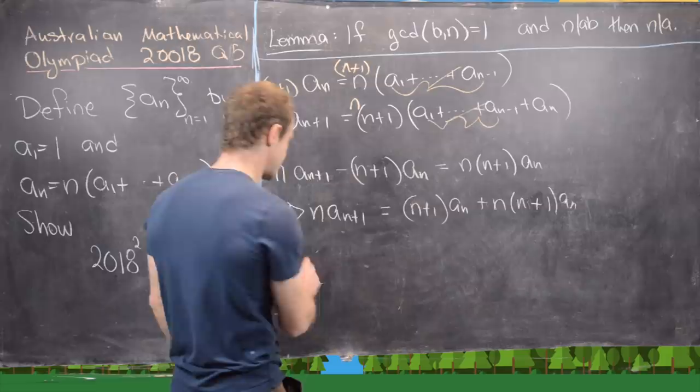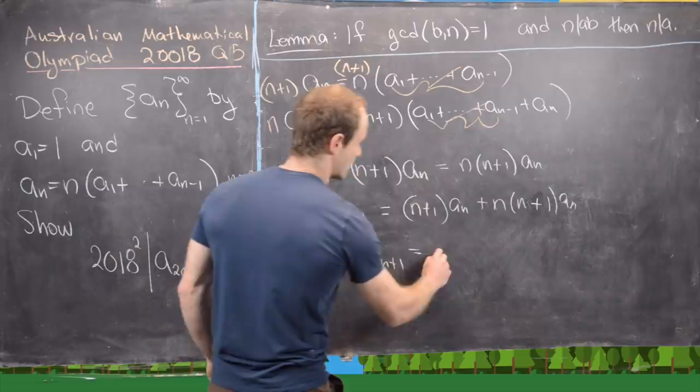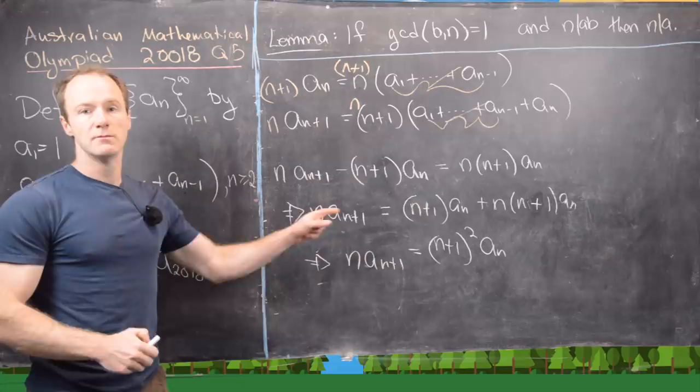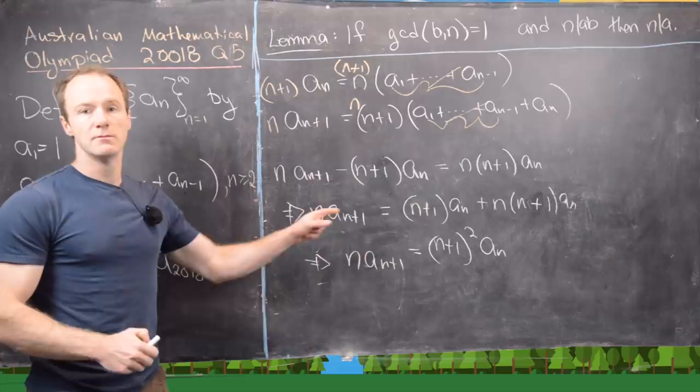But now those are like terms so that allows us to write the following equation. n times a_{n+1} equals n plus 1 quantity squared times a_n. But notice this equation tells us the following.